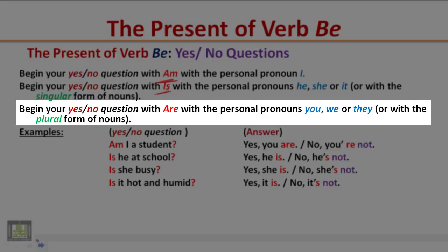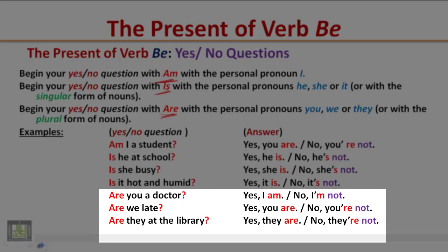Begin your yes/no question with 'are' for the pronouns you, we, or they, or with a plural noun. Examples: Are you a doctor? Yes, I am. / No, I'm not. Are we late? Yes, you are. / No, you're not. Are they at the library? Yes, they are. / No, they are not. Pay attention to the word order in yes/no questions: begin your question with verb be followed by the subject.